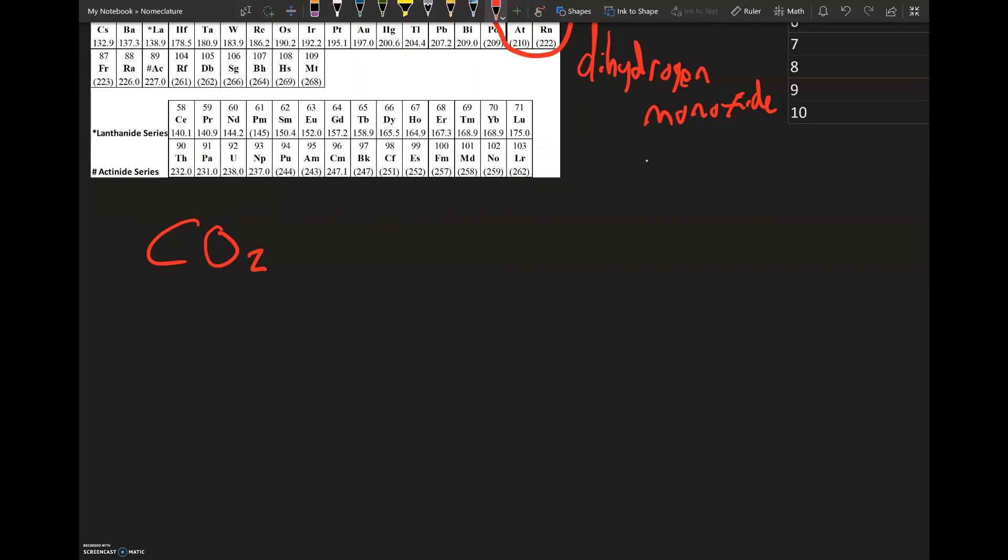In the previous example we talked about putting the mono in front. You only use the mono if the second element has one. In this particular case the first element is carbon and there's only one carbon. We don't have to put mono in front of that.